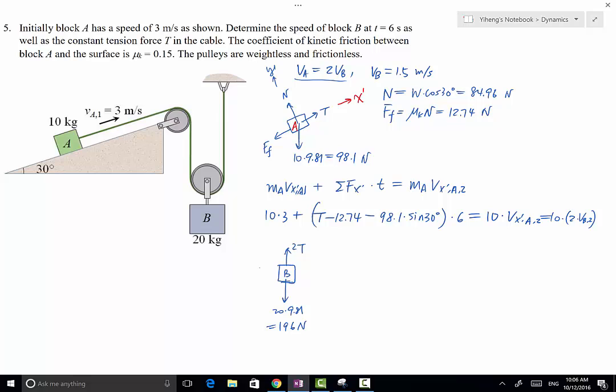So if I choose this to be my positive Y direction, then along the Y direction, I have MB VB1 plus total Fy times T that equals MB VB2. So 20 kg, VB1 is 1.5 meters per second. Don't forget the direction is vertical down, therefore that's positive 1.5. Plus the total force along the positive Y direction, vertical down being positive, is 196 minus 2T times 6 seconds, and that equals 20 times VB2.